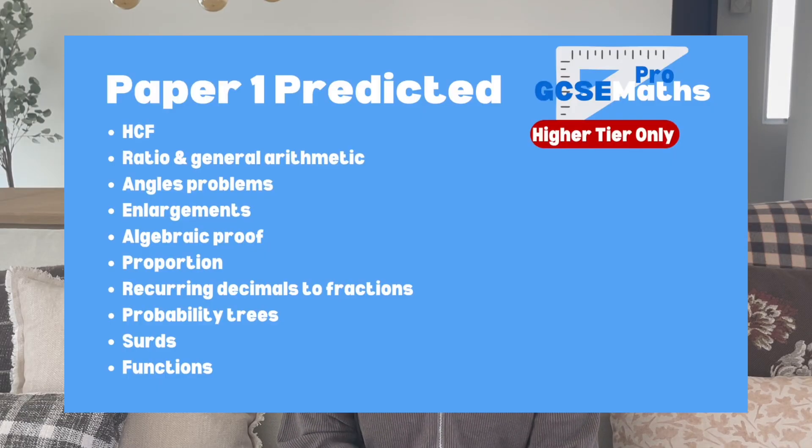Some of the topics that did come up have come up most years, and I know a lot of those were actually harder than some of the previous ones anyway. But there was also the other 50% that I thought would come up and hasn't, which I therefore think is going to be coming up in the next paper. So here are some of the topics that didn't come up that I think will definitely be in either Paper 2 or Paper 3.